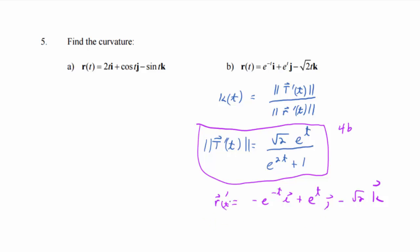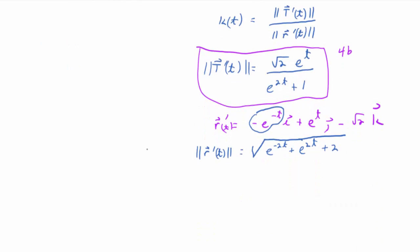So, that's of T. And then what's the magnitude? It's the magnitude of R prime of T. So that would be the square root. Well, yeah. So if you take this guy, that would be e to the negative 2T, right, if you square it, plus e to the 2T, and then plus 2.